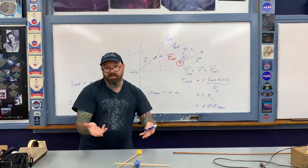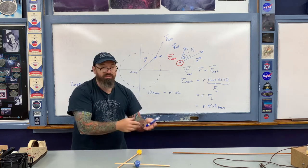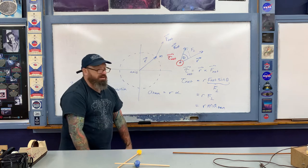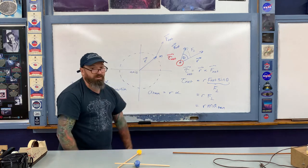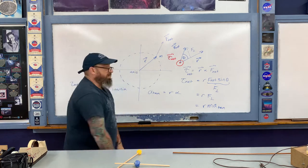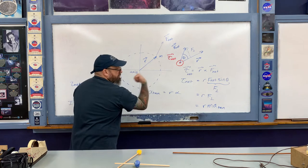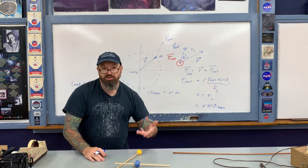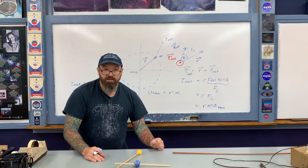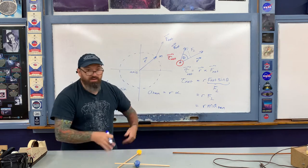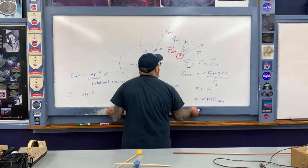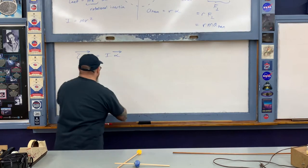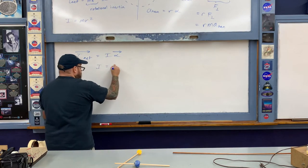In terms of kinematics, imagine the object is initially at rest and we apply a net force in a given direction. The object starts to circulate counterclockwise on the diagram, so the angular acceleration vector is out of the board — describing the change in the angular velocity vector.